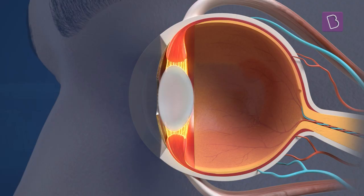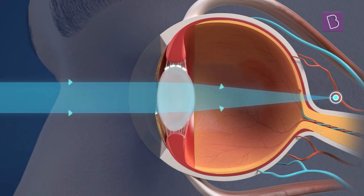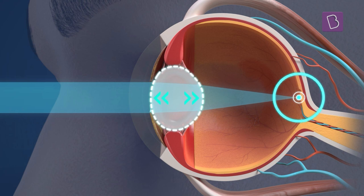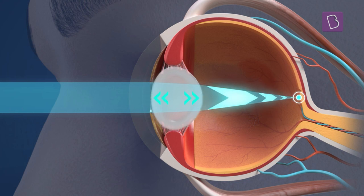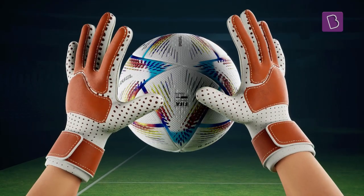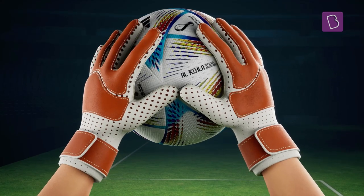But here's the beauty of the ciliary muscle. They contract, making the lens thicker, increasing the converging power of the lens, and accommodating vision.